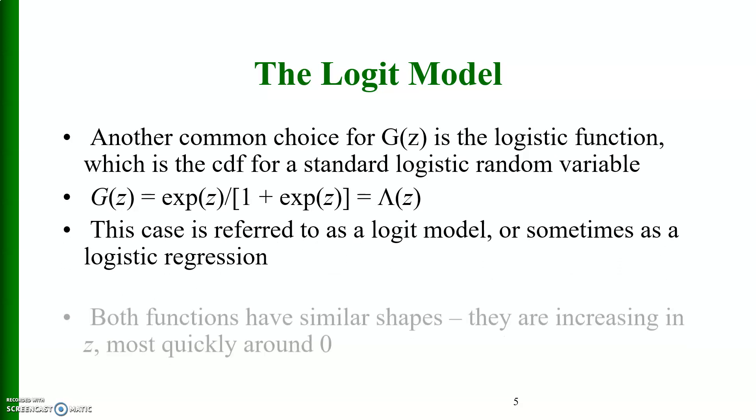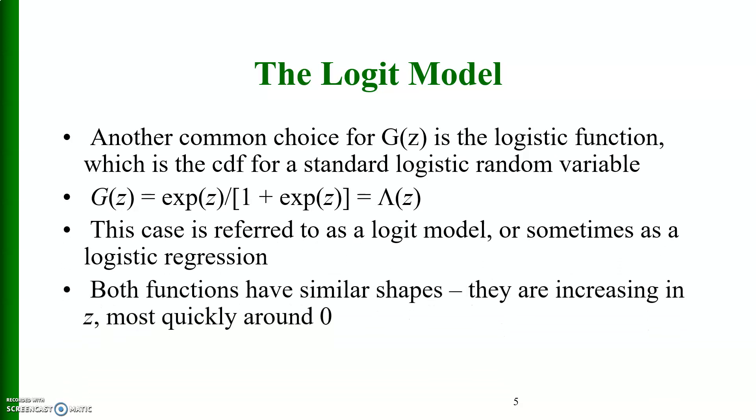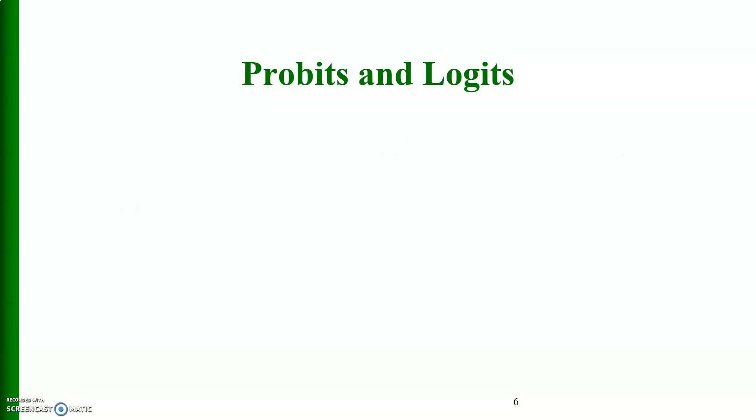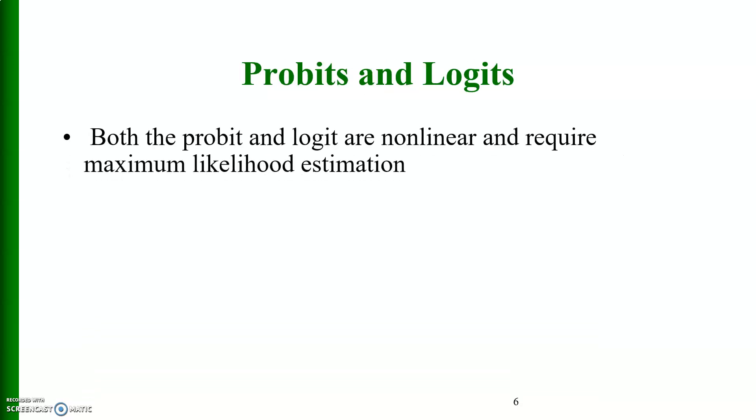Both functions have similar shapes. They are increasing in z most quickly around zero. Both the probit and logit are non-linear and require maximum likelihood estimation. As I mentioned earlier, in case of probit and logit models we cannot use the usual ordinary least square, but instead we use maximum likelihood estimation method.